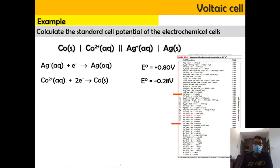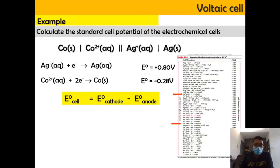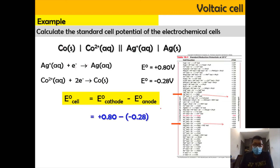Now for another example: at the anode we have Co → Co²⁺ (oxidation), and at the cathode we have Ag⁺ → Ag (reduction). When applying the formula, both must be in reduction form. The cathode value is +0.80 V and the anode value is −0.28 V. So E⁰cell = (+0.80) − (−0.28) = +1.08 V.